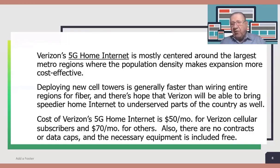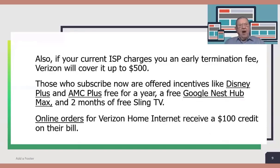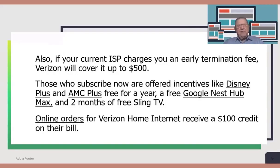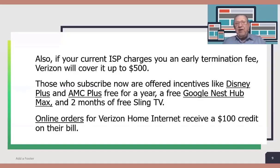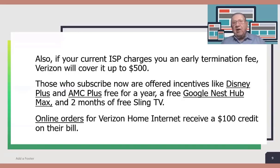The cost of Verizon's 5G Home Internet is $50 a month for Verizon cellular subscribers and $70 a month for others. There are no contracts, no data caps, and necessary equipment is included free. Also, if your current ISP charges an early termination fee, Verizon will cover it up to $500 — very generous. Subscribers are offered incentives like Disney Plus and AMC Plus free for a year, a free Google Nest Hub Max, two months of free Sling TV, and online orders receive a $100 credit on their bill.